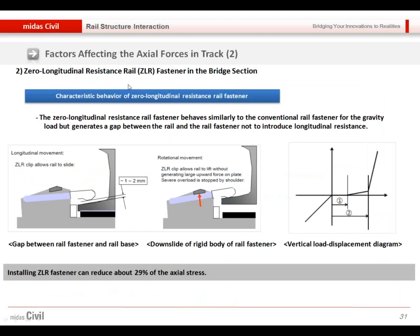And zero longitudinal resistance fastener is the other factor. So if the axial stress is larger than our expectation, then we can review the installation of the GLR. Installing GLR fastener will reduce about 30% of axial stress.